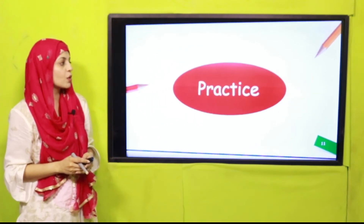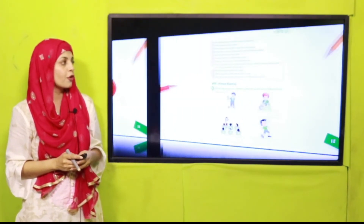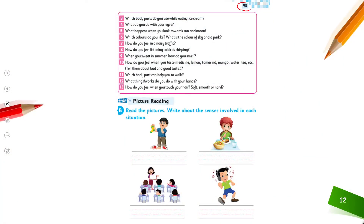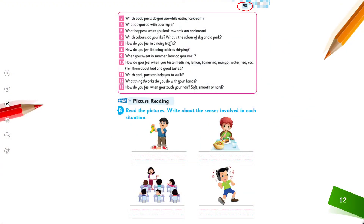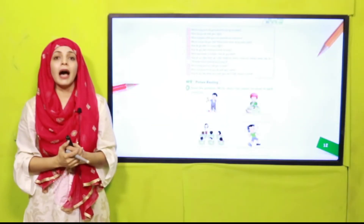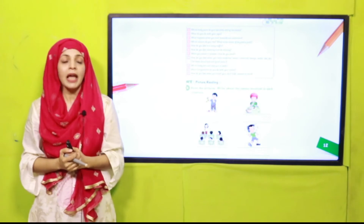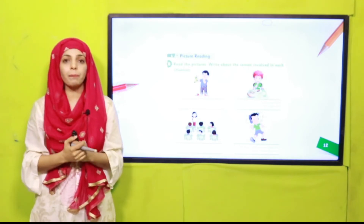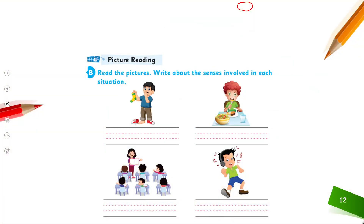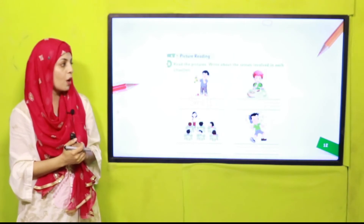Now let's do the practice page. Open page number 93 - quickly pause the video and open page number 93 in your books. I hope everybody has opened page number 93. Here we will do the picture reading. Look at the pictures and tell which sense belongs to each picture. Look at the first picture: smelly socks. How can he tell the smell is bad? Because of sense of smell. Write the name of the sense.